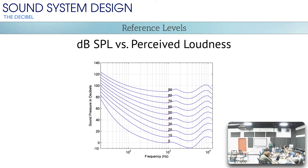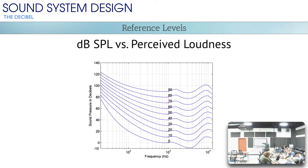It gets a little more complex because they also found that the difference in sensitivity from frequency to frequency — the ratios — change depending on the loudness. At really low levels, the ratio between 1 kHz and 100 Hz is much higher: you have to turn up those low frequencies a lot more. But when you get up to 90 dBSPL at 1 kHz, 100 Hz only needs to be 10 dB louder in order for most people to say it sounds the same.